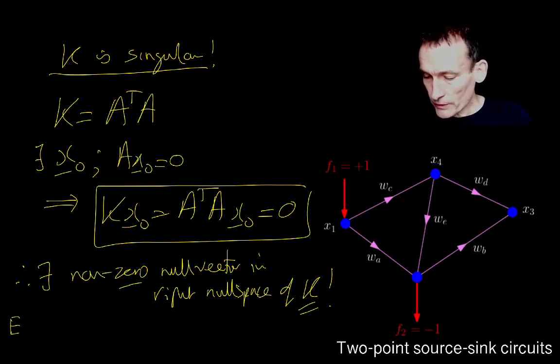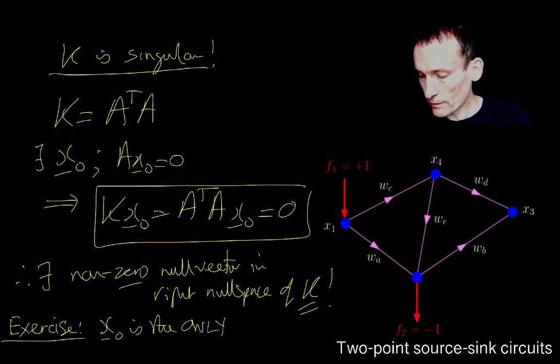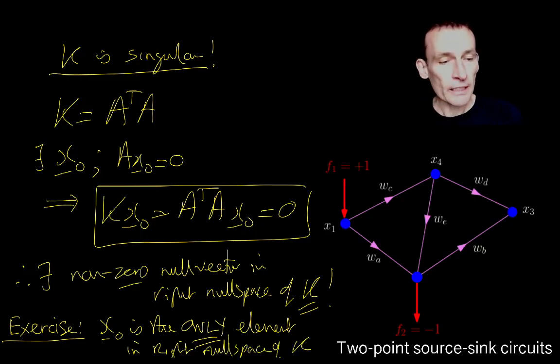So therefore, there exists a non-zero null vector in the right null space of K. And it's the same right null vector that exists in the right null space of A. Now, I am going to leave it as a little exercise to prove that X0 is the only element in the right null space of K. It's the only element in the right null space of K. That's a little exercise.